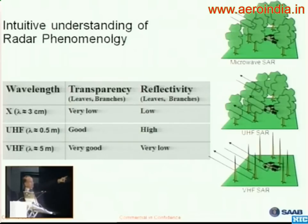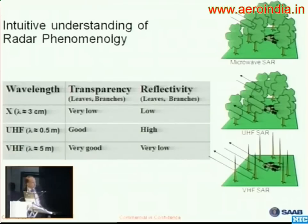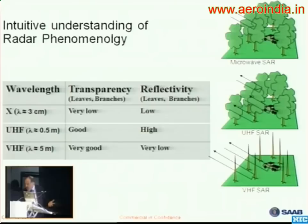If you go still lower and use wavelengths that are more than a meter, it happens — which is a scientific fact, very thoroughly investigated — that the backscattering from the fine structure in the trees gets very, very small. So what you get left from the trees is actually the tree stems, which you see on top of the response from a target which, because it's many meters long, gives a good backscattering.